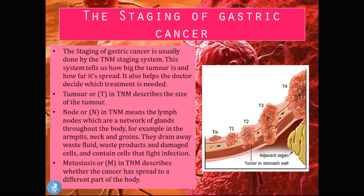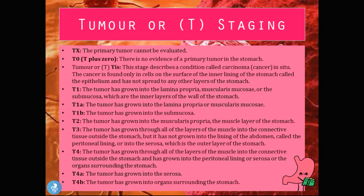The staging of gastric cancer is done using the TNM staging system, which describes how big the tumor is and how far it has spread, helping the doctor decide on treatment. T stands for tumor and describes its size; N stands for node and refers to the lymph nodes throughout the body; and M stands for metastasis, describing whether the cancer has spread to a different part of the body.